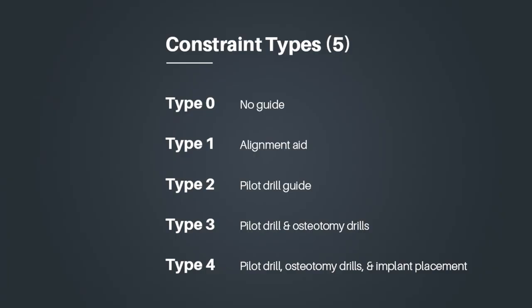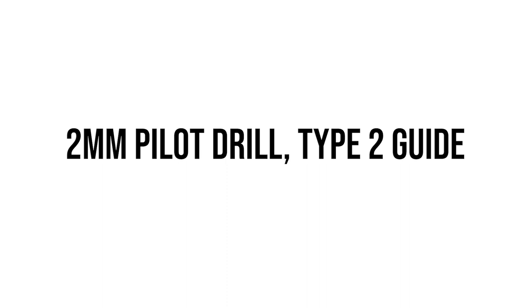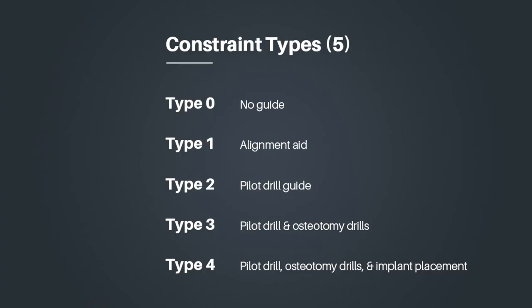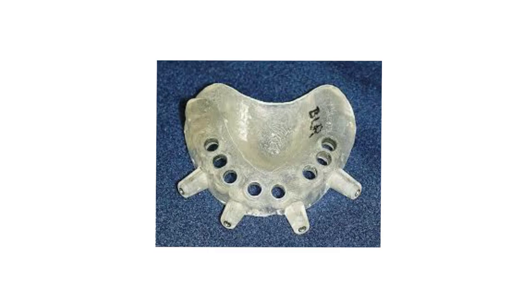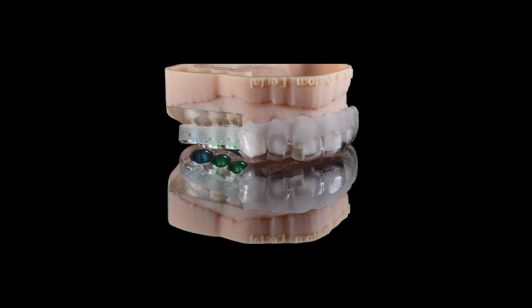Type 2 guides are where we start to get some constraints. A type 2 guide constrains only the pilot drill — think 2mm pilot drill, type 2 guide. With a type 2 guide, neither the rest of your drills in your drilling sequence nor the implant are constrained. Type 3 guides constrain the pilot drill and all of the osteotomy drills. Finally, type 4 guides constrain the pilot drill, the osteotomy drill, and the implant as it's placed.